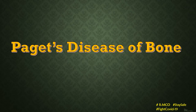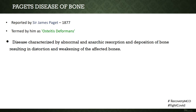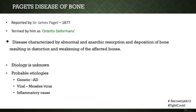The next topic is Paget's disease of bone, first reported by Sir James Paget in 1877, who termed it osteitis deformans. Paget's disease is characterized by abnormal and anarchic resorption and deposition of bone, resulting in distortion and weakening of affected bones. The pathogenesis is relatively unknown; various possible etiologies have been proposed, including a genetic etiology possibly related to an autosomal dominant trait.